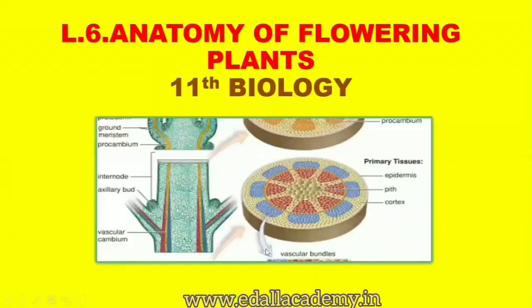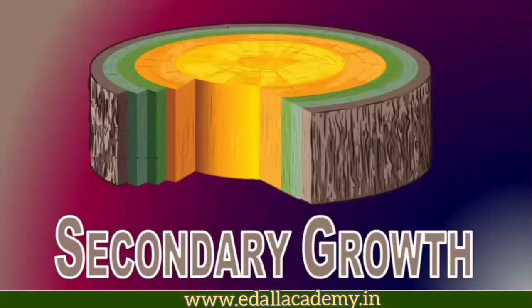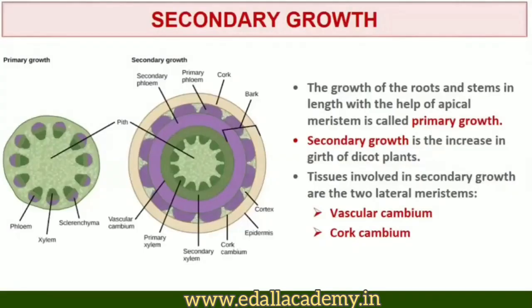Chapter 6: Anatomy of Flowering Plants. Section 6.4: Secondary Growth. The growth of roots and stems in length with the help of apical meristem is called primary growth. Apart from primary growth, most dicotyledonous plants exhibit an increase in girth. This increase is called secondary growth. The tissues involved in secondary growth are the two lateral meristems: vascular cambium and cork cambium.